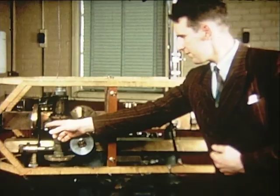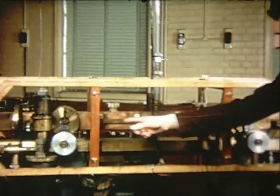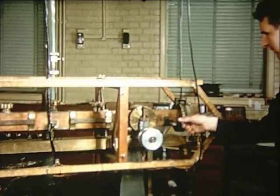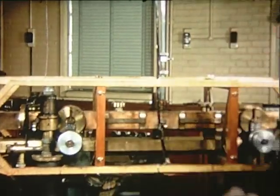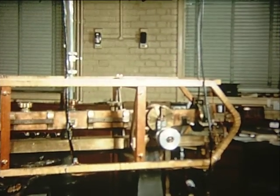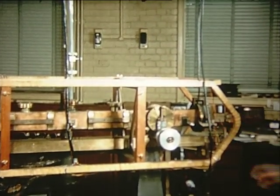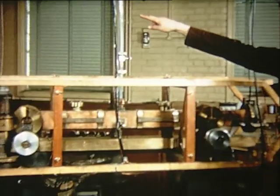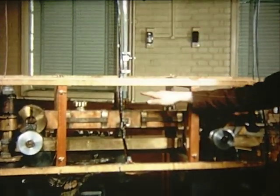This is the main beam chamber down which the atoms travel. Here are the first deflecting magnet, the second deflecting magnet, and the detector. The alternating field is fed through a waveguide to the beam chamber.